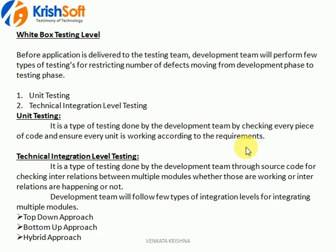White box testing is done by the development team before they hand over it to the testing team. The development team does some sort of testing at the code level, to check everything is working fine. If something is not working, they fix it and give it to the testing team for end-to-end testing. White box testing usually involves two types: unit testing and technical integration level testing.